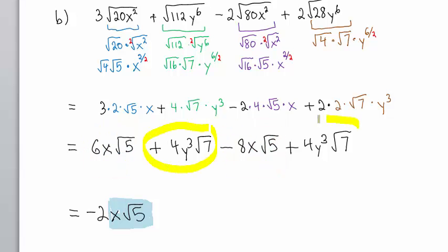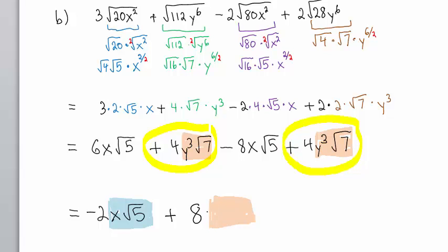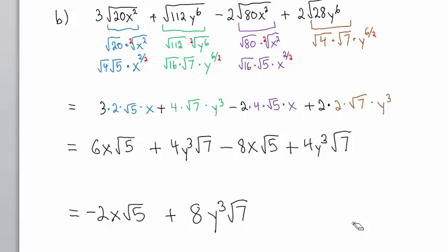This term and that term are like terms because they both have the factor x times the square root of 5. When we add the coefficients 6 and negative 8 we get negative 2, giving us negative 2x square root of 5. These two remaining terms are also like terms — they both have factors y cubed times the square root of 7. When we add their coefficients 4 and 4 we get 8, giving us 8y cubed square root of 7. And that is our answer.